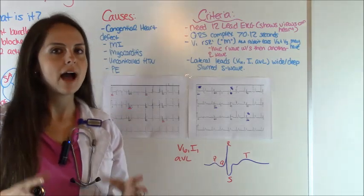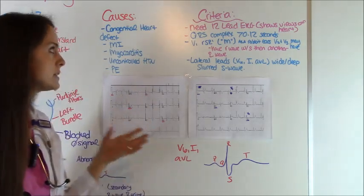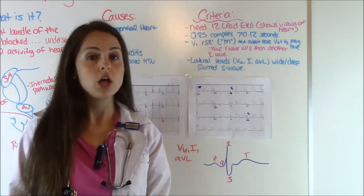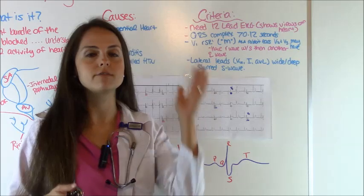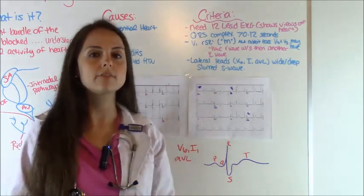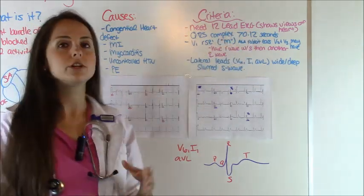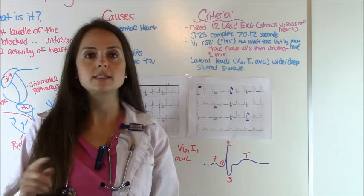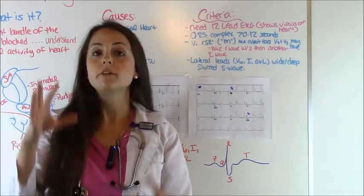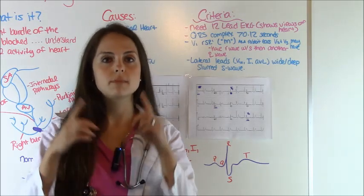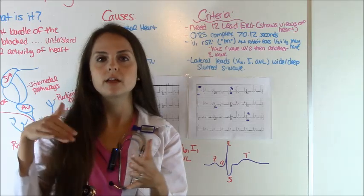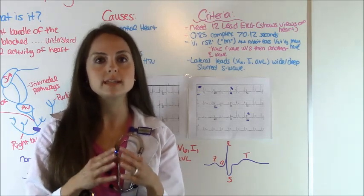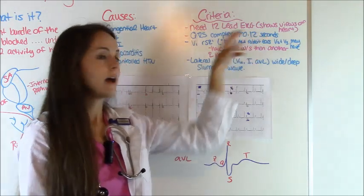Let's talk about the criteria for how you would know if this is a right bundle branch block, because there are certain criteria that you have to have. The majority of people agree on this criteria. First, in order to evaluate a right bundle branch block, you need a 12-lead EKG because it looks at various views of the heart — septal views, lateral views, inferior views. Then you'll want to look at your QRS complex. For it to qualify as a right bundle branch block, your QRS complex will need to be at least greater than 0.12 seconds — that's at least three small boxes, since each box represents 0.04 seconds.